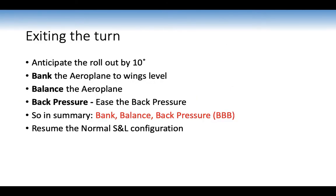Exit from the turn: anticipate the rollout by 10 degrees, then bank, balance, back pressure in reverse. Bank the aeroplane wings level, balance the aeroplane, and ease off the back pressure. Resume the normal straight-level configuration: power 2500 RPM, attitude one-third ground two-thirds sky, speed 105 knots, trim and balance.